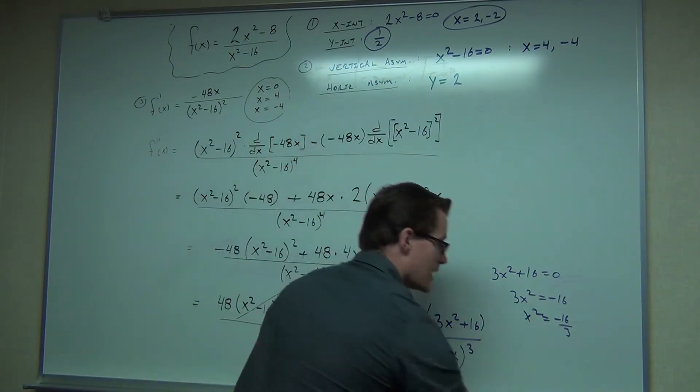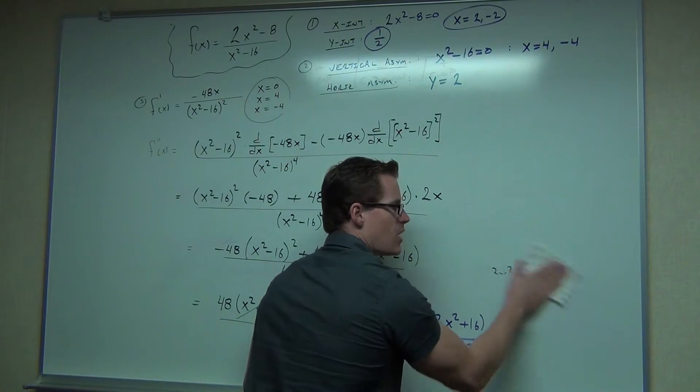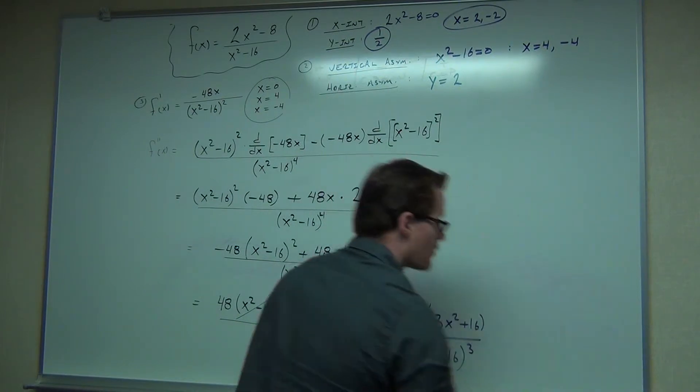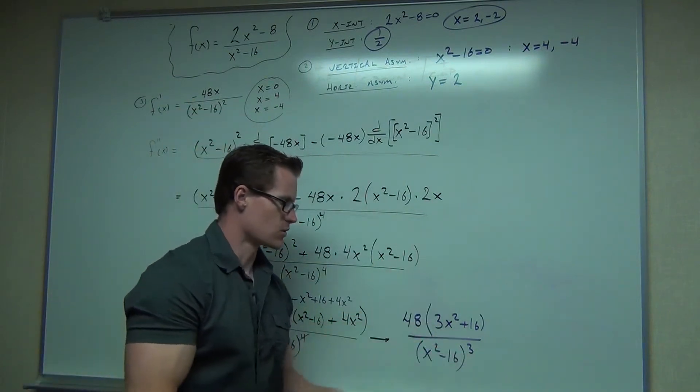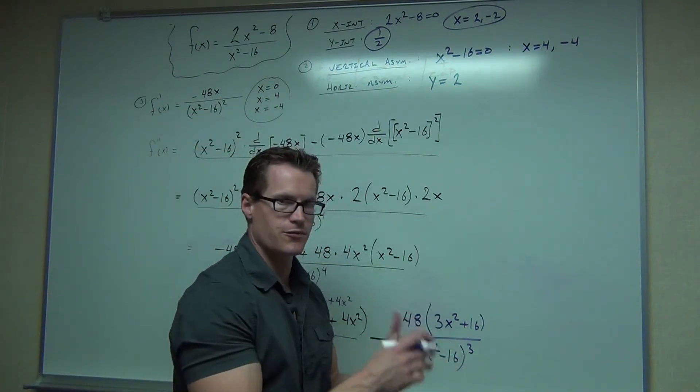The denominator, you're going to see, again, those same points keep popping up. Even from the beginning of our function, we had 4 and negative 4 as being undefined. That happens here as well. So again, we're going to have the points 4 and negative 4.